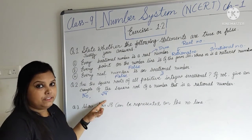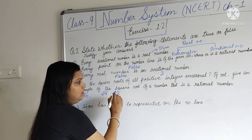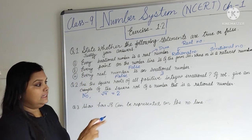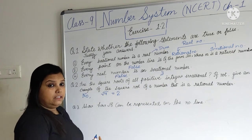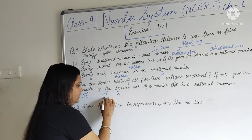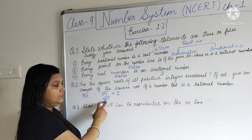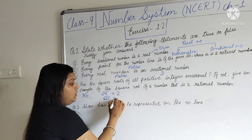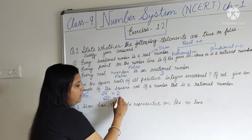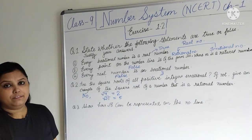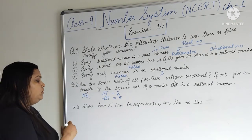√4 is a positive integer but it is a rational number, not irrational. We can give more examples: √25 — this is also a positive integer, but its square root equals 5, which is a rational number.